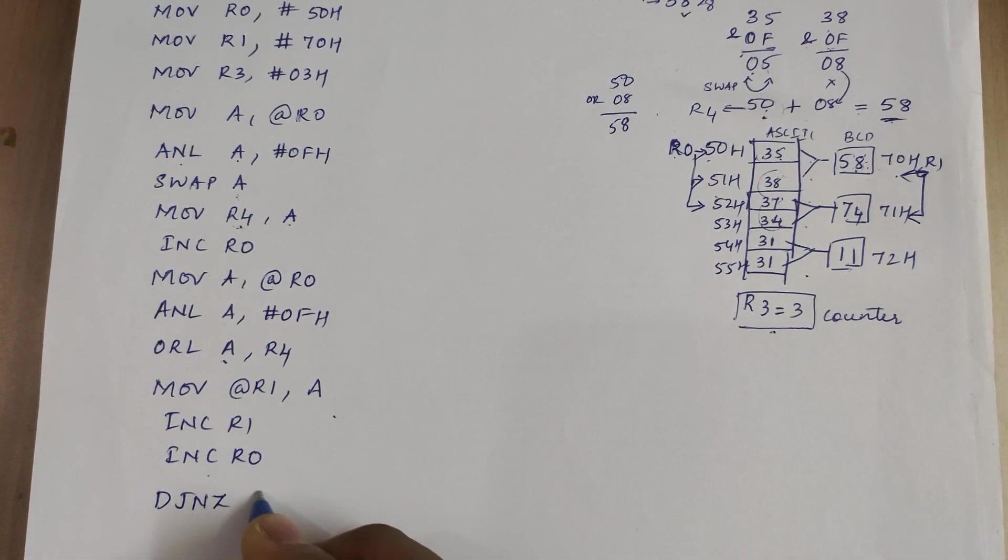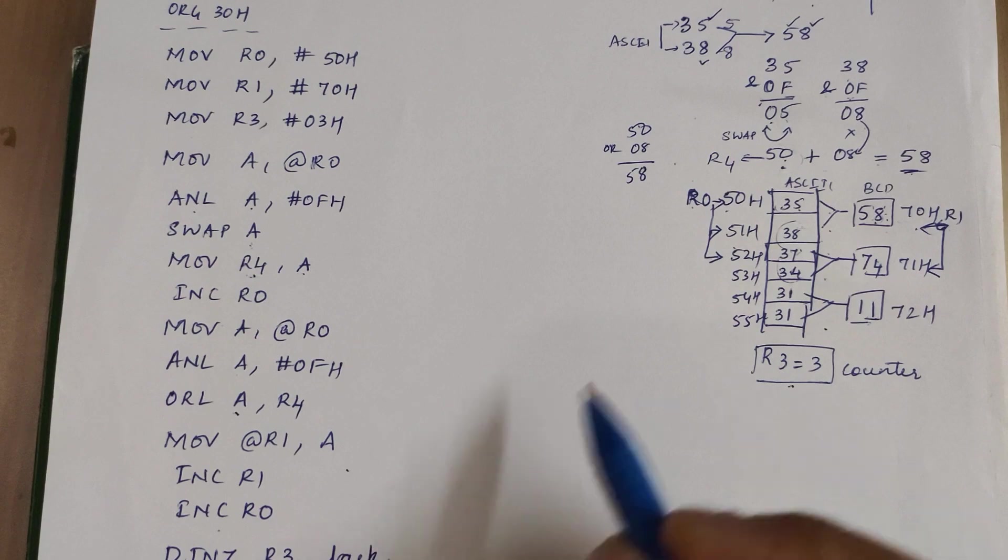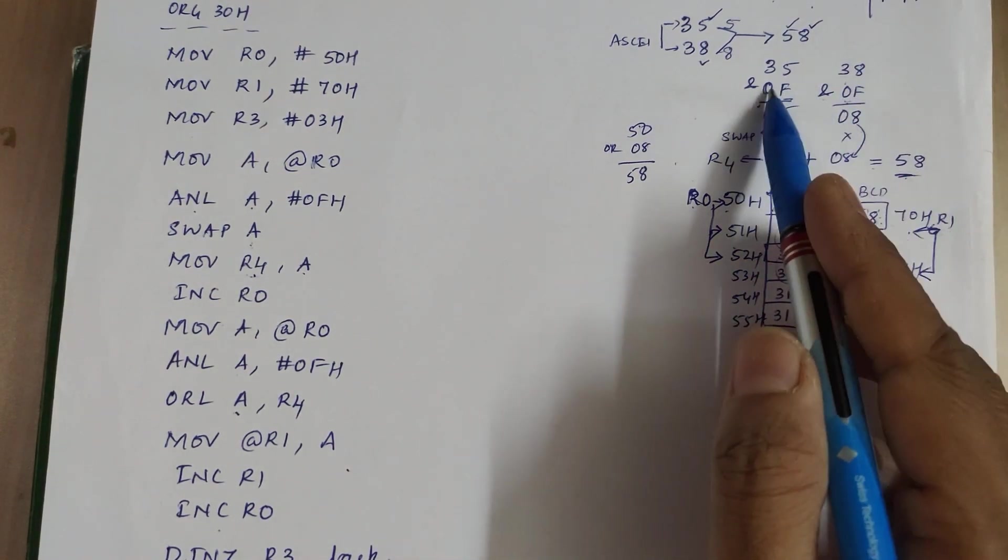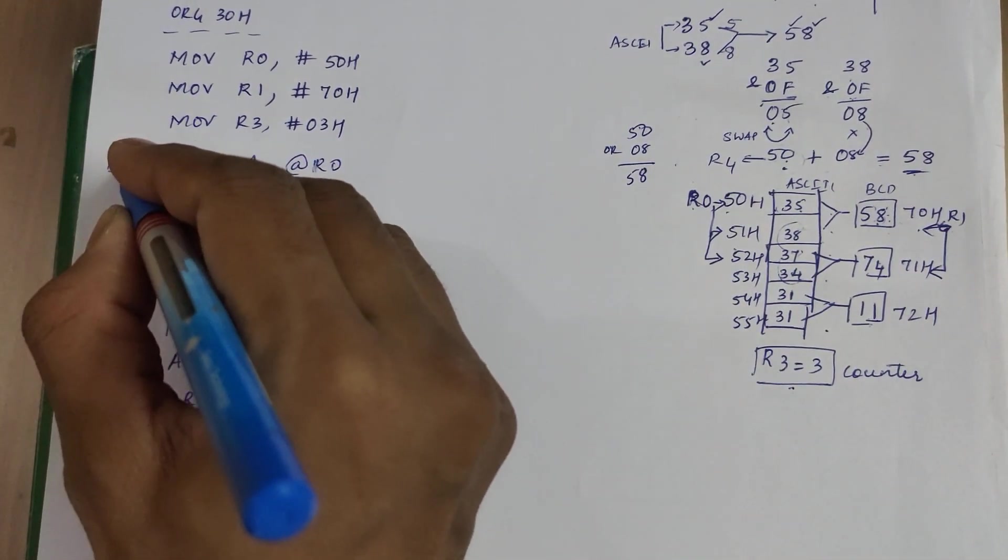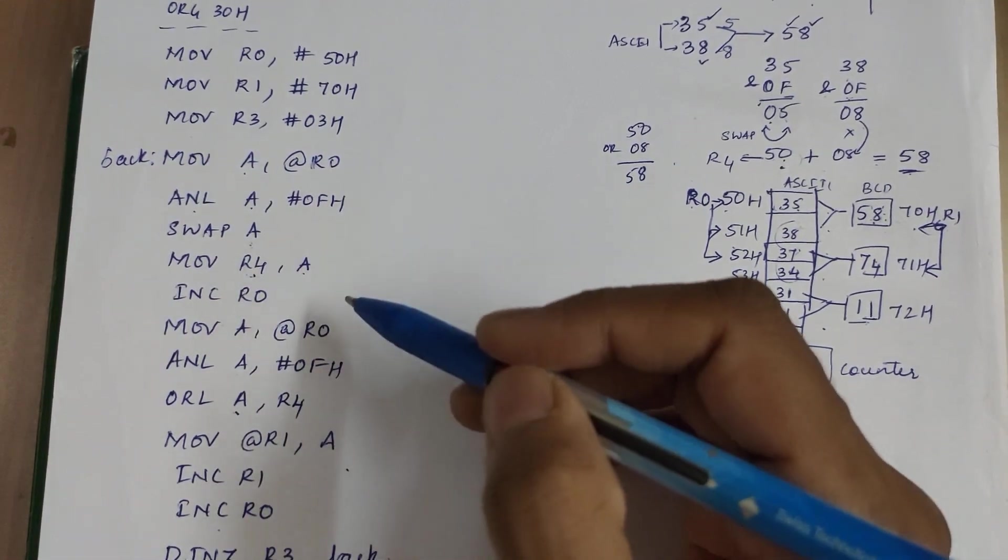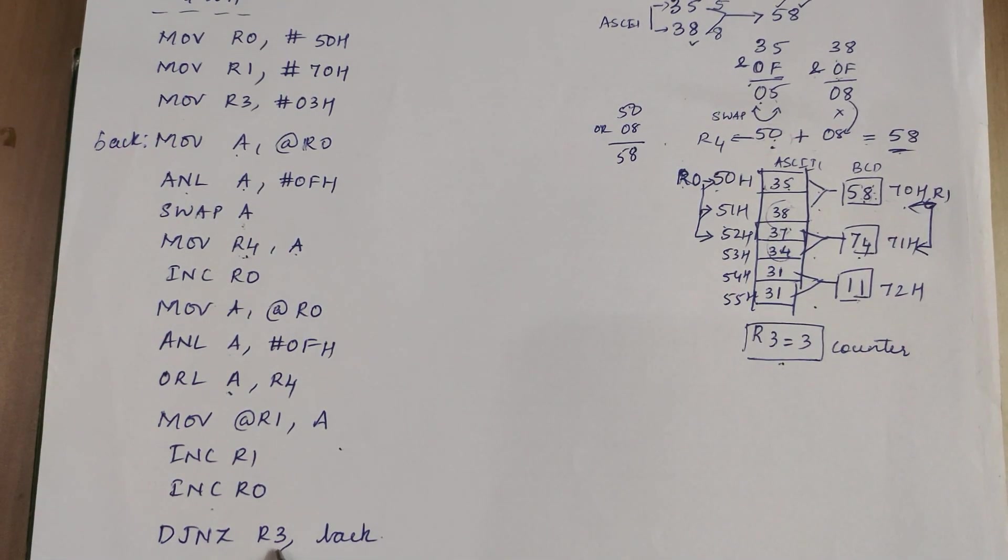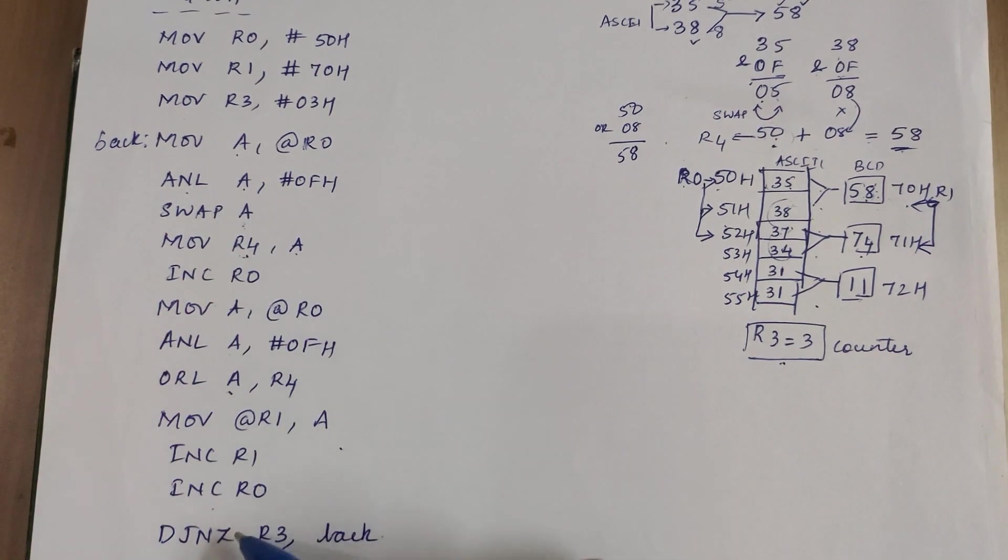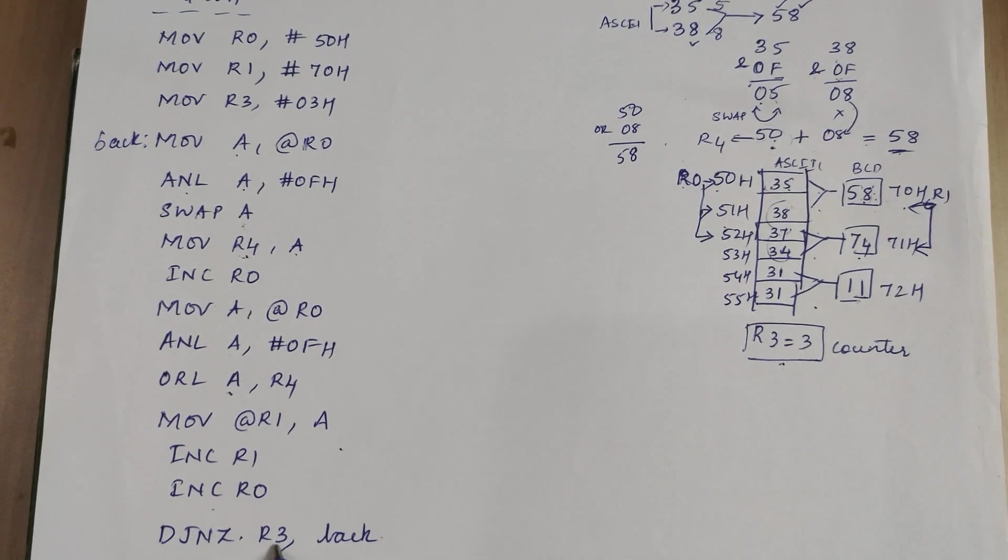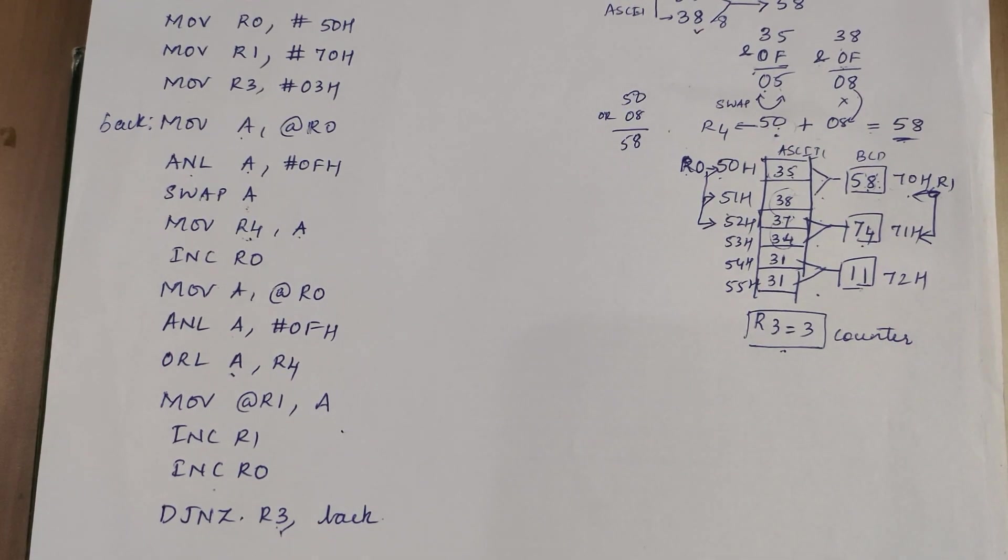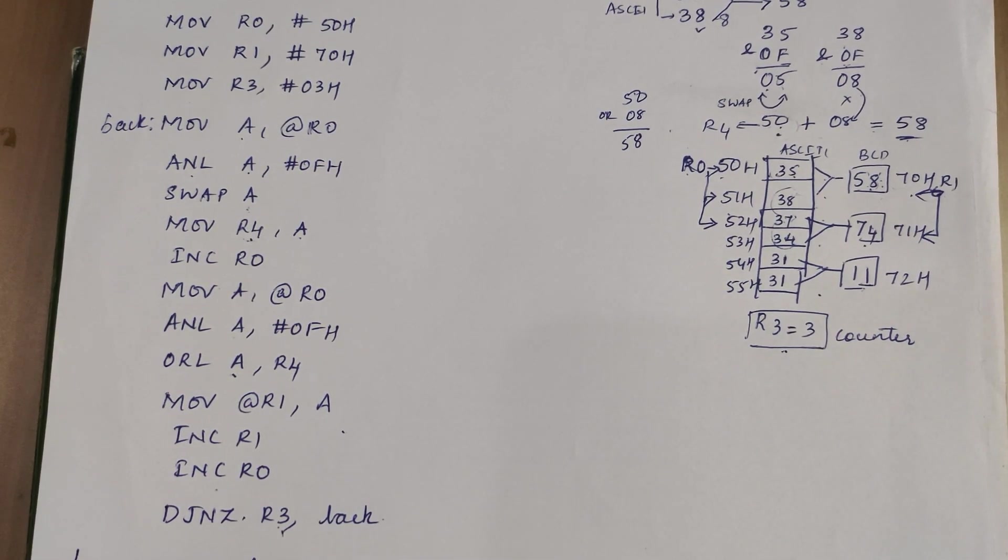We have assumed we are taking three ASCII numbers for three BCD packed datas. So DJNZ R3 comma back. And where will this back go to? We have to repeat the process of taking the data, doing the AND operations with 0F, swapping, the same set. So that goes to this step of taking the data. So this is back. Now the second data will be run in the same way. 37 and 34 are converted into 74. Then R3 would have become 1 by then. It will repeat the third process: 31, 31 is taken, converted into 11, stored in 72H. Now R3 becomes 0. Once it is 0, we have to stop the program. We can halt the program and end the program.